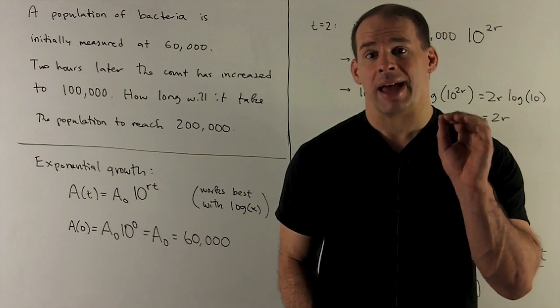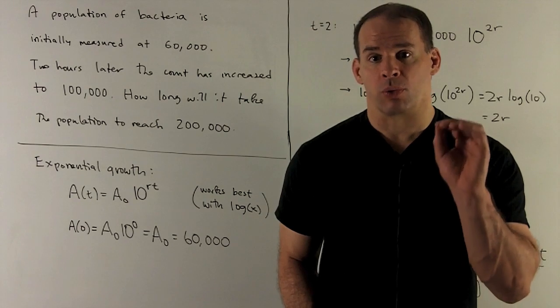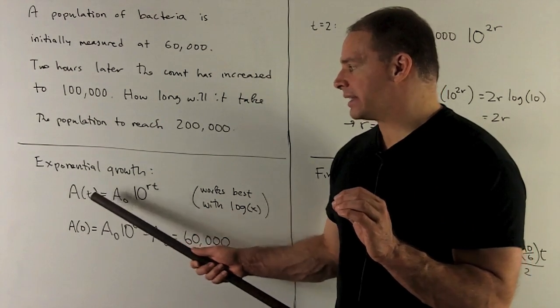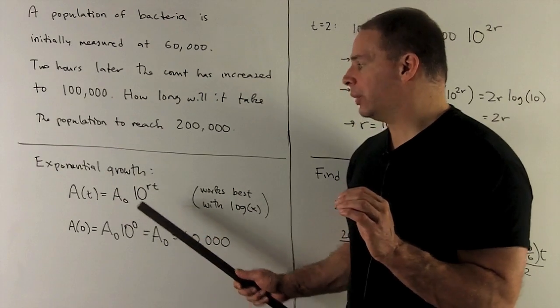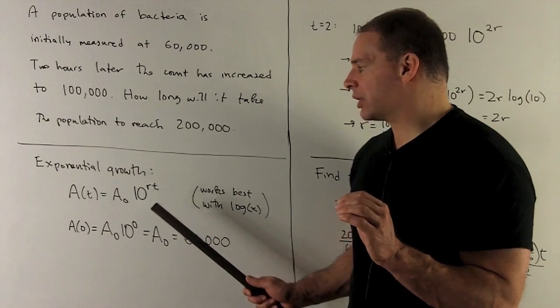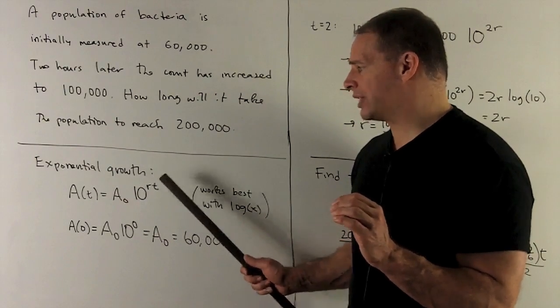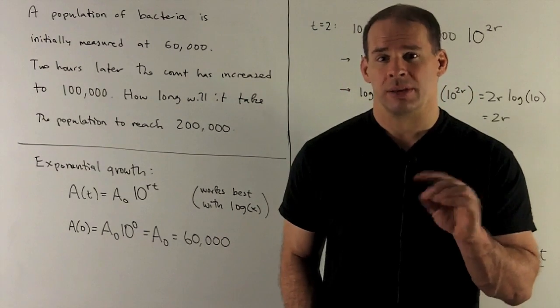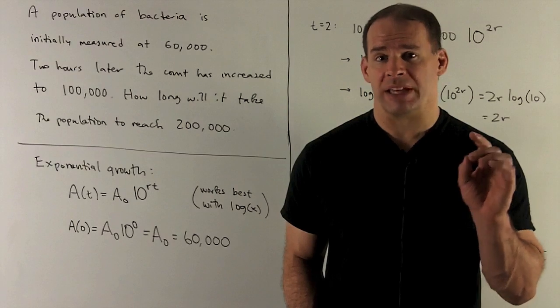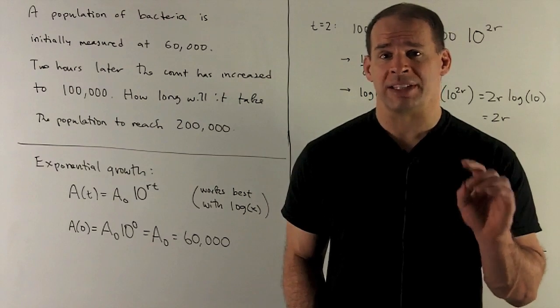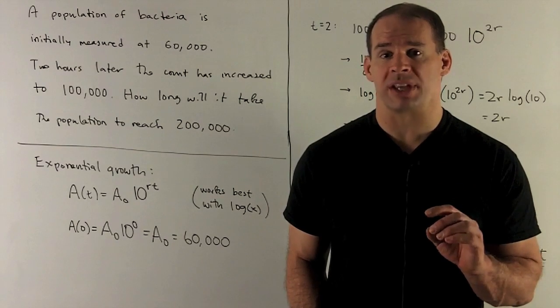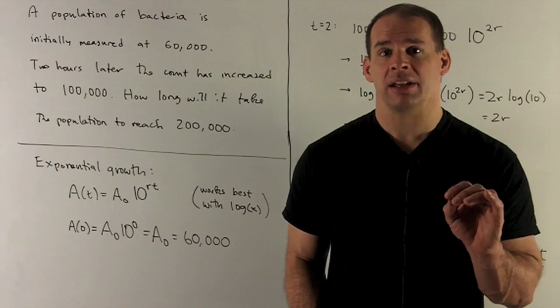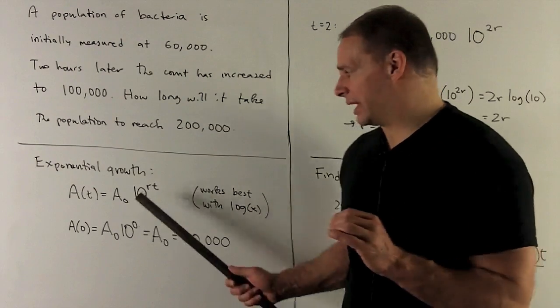This problem is in exponential growth, so I'm going to write my formula down. I'll write it as A at time t, that's the amount, is equal to A₀ times 10 raised to the constant r times t. Now you may see this instead of base 10 with base 2 or with base e where e is roughly 2.7. Since here we focused a lot on log base 10, we'll keep this in base 10 also.